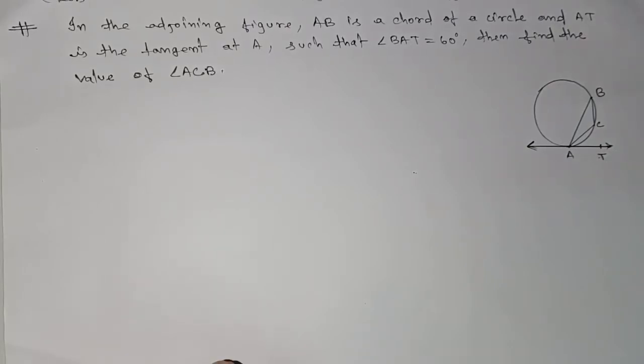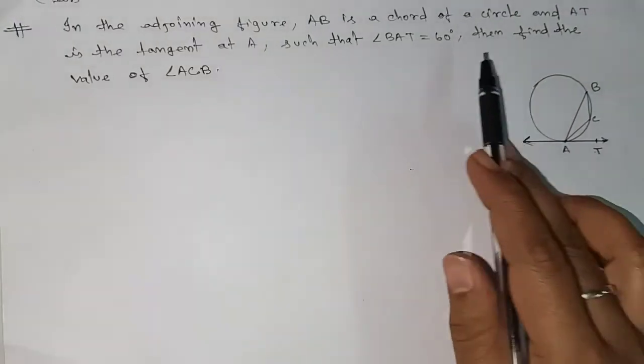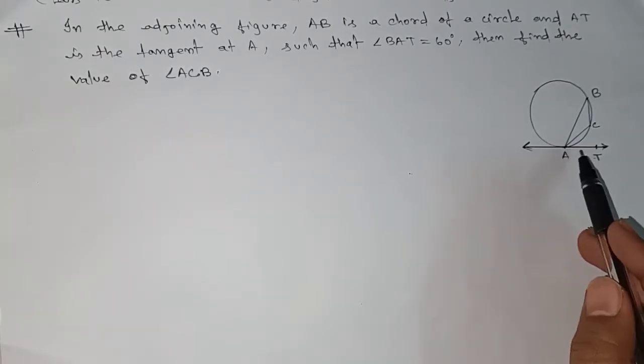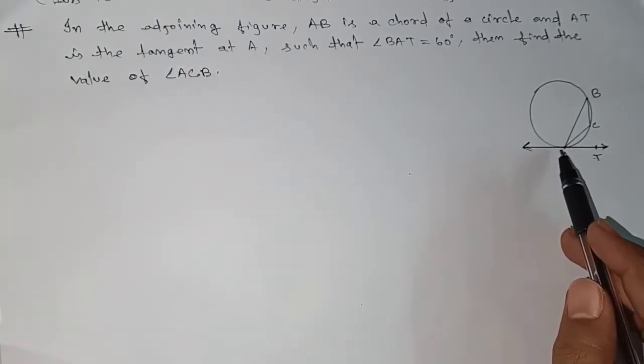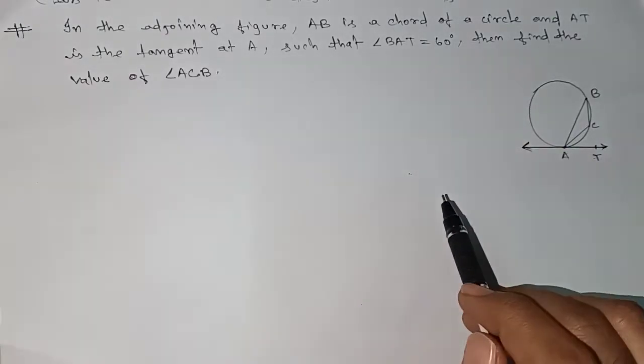Namaste students. Here we have one problem related to circles, class 10. If you look at the problem, in the adjoining figure AB is the chord of a circle and AT is the tangent at A such that angle BAT equals 60 degrees.